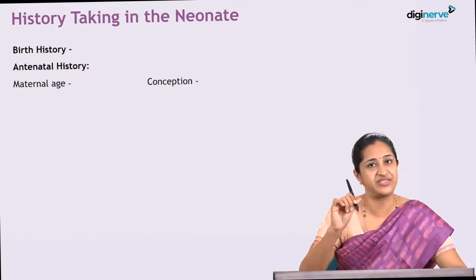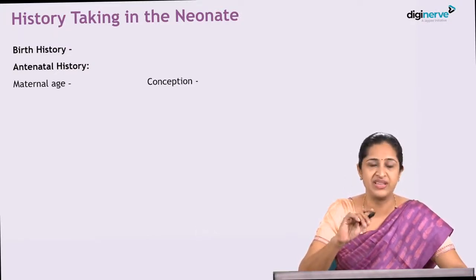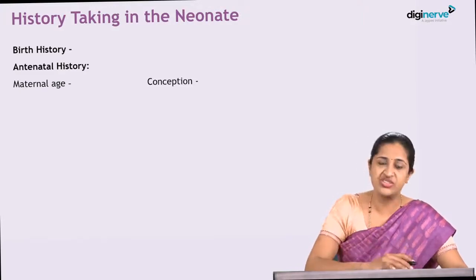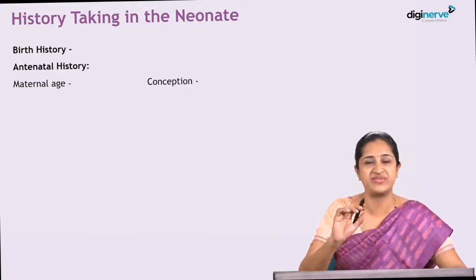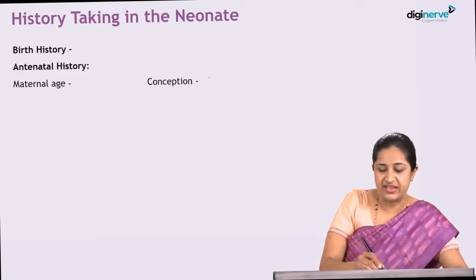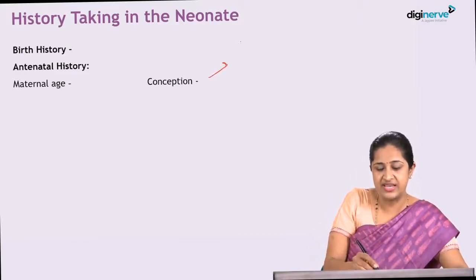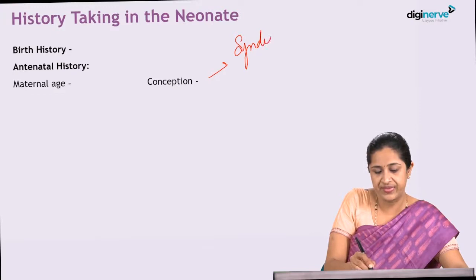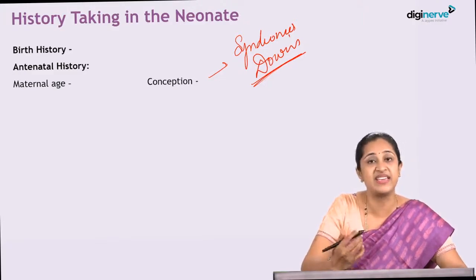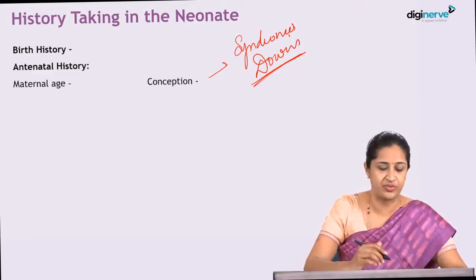In the antenatal history, the first question is the age of the mother and the time of conception. Maternal age at the time of conception is very important because the more advanced the maternal age, the higher the risk for Down syndrome.